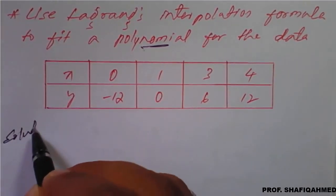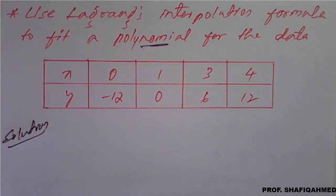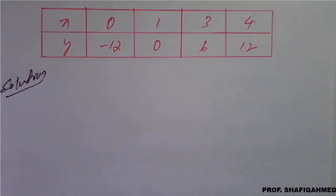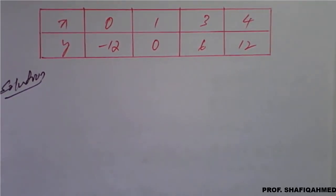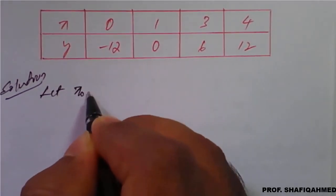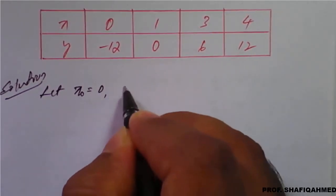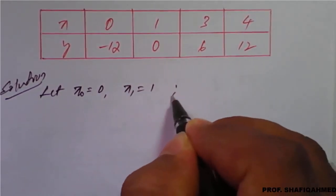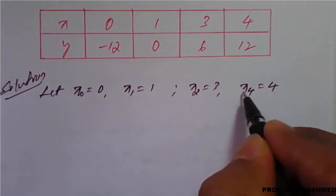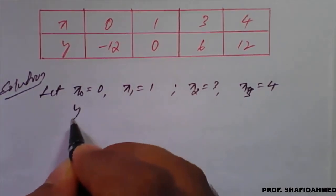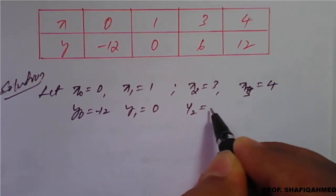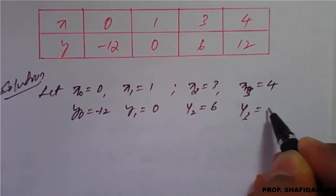Solution. By using Lagrange's interpolation, we will find the polynomial. Here, they have not given the X value to find — it will remain as X. So: X naught is 0, X1 is 1, X2 is 3, X3 is 4. And Y naught is minus 12, Y1 is 0, Y2 is 6, Y3 is 12.